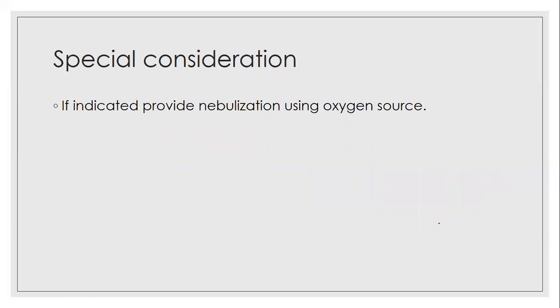As a special consideration, if indicated, you can provide nebulization using an oxygen source. Suppose if the patient is having severe breathing difficulty and low oxygen saturation, you can provide nebulization along with oxygen support. In this class we have mainly discussed regarding the nebulization procedure — what are the purposes of nebulization, what are the needed articles, the types of nebulizers, the parts of the nebulizer, and the procedure along with nursing actions and rationale.